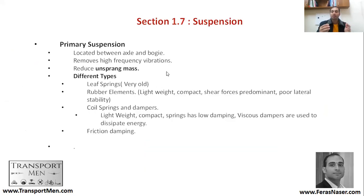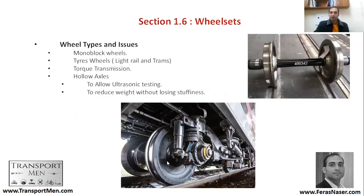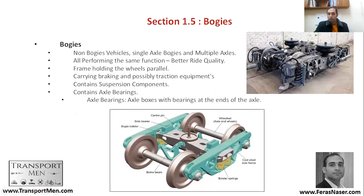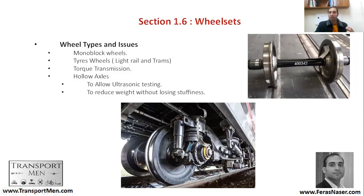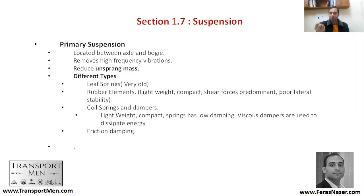Sometimes you would have hollow axles to allow ultrasonics and to reduce weight. Regarding the suspension system, we can talk about primary and secondary suspension systems. The primary suspension system is located between the axle and the bogey, and it removes high frequency vibrations. Looking at this bogey, the unsprung mass is the mass from roughly the half of the wheel downwards that does not have any suspension element associated with it.